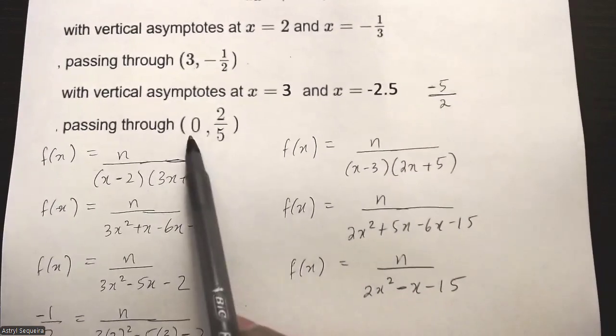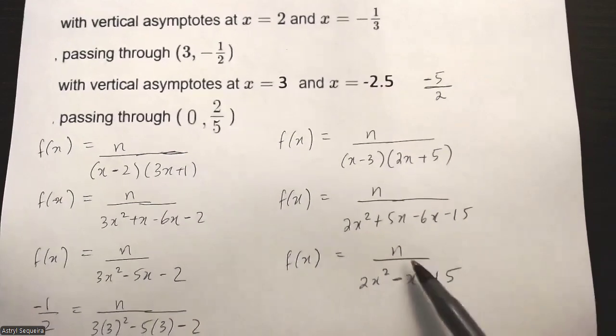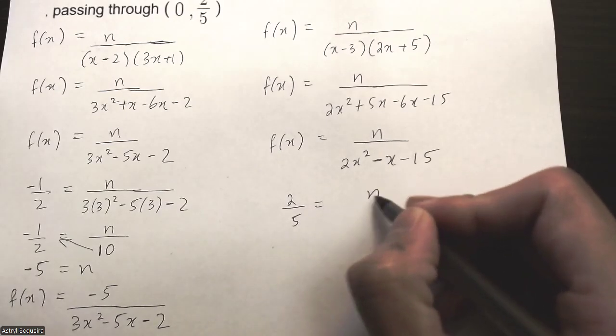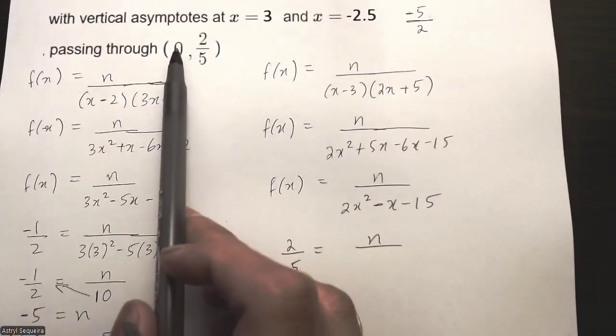And then I'll substitute in my point and find my n. So I'm replacing y with 2/5 and x with 0.